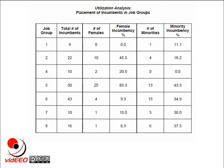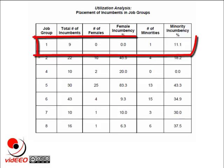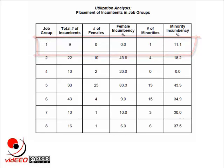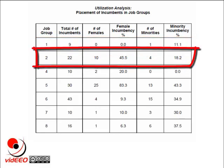Here we have a sample utilization analysis. This analysis is done on a job group basis. For each job group, we compare the number of female incumbents and the number of racial minority incumbents to the total number of incumbents. For Job Group 1, we have a total of 9 incumbents. None of these 9 are female, so our female incumbency is 0%. One of the 9 incumbents is a racial minority, so our minority incumbency is 1 out of 9, or 11.1%. Looking at Job Group 2, we have 22 incumbents, 10 of which are female, so our female incumbency is 10 out of 22, or 45.5%. Four of the 22 are minorities, so our minority incumbency percentage is 18.2%.